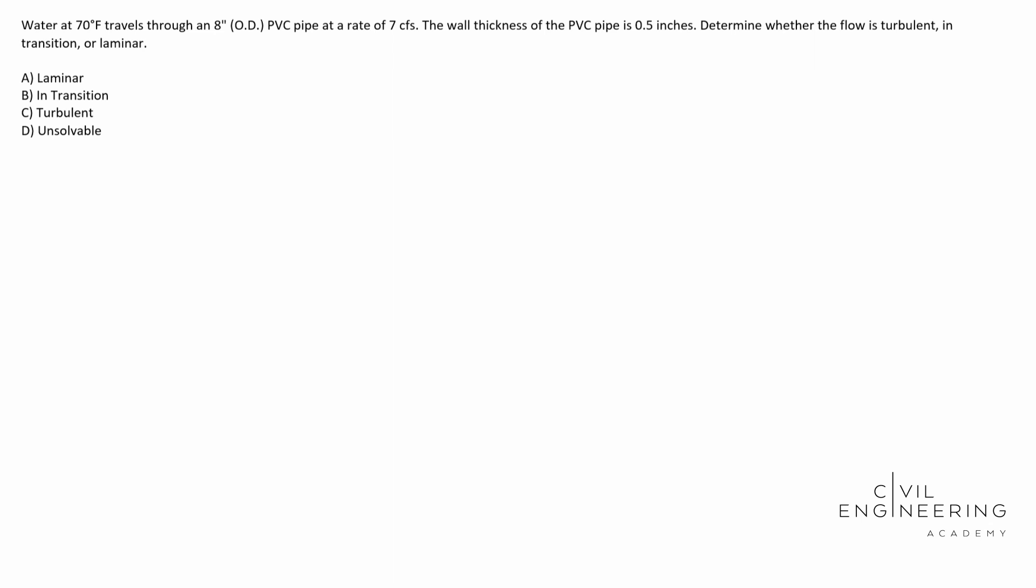Water at 70 degrees Fahrenheit travels through an 8 inch outside diameter PVC pipe at a rate of seven cubic feet per second.